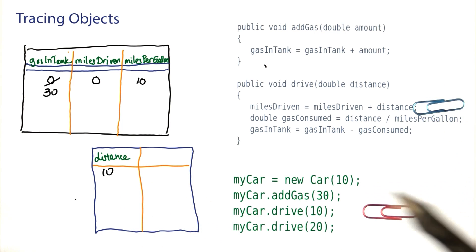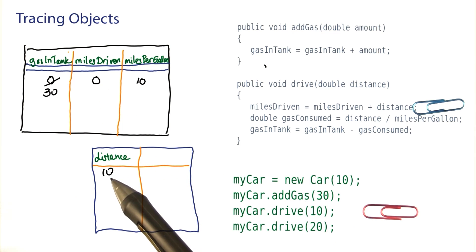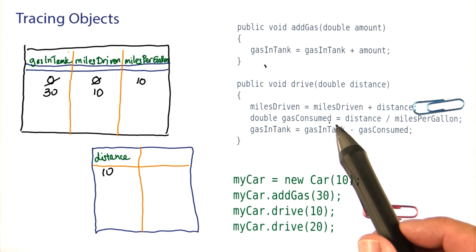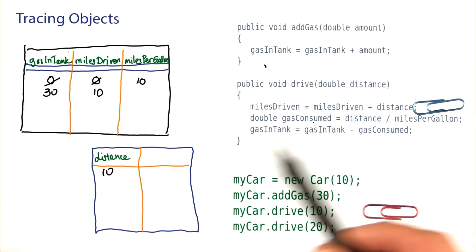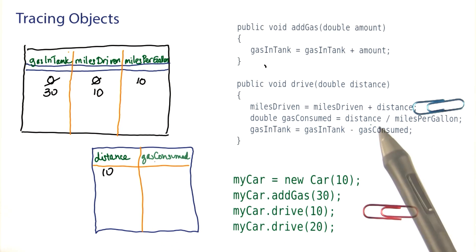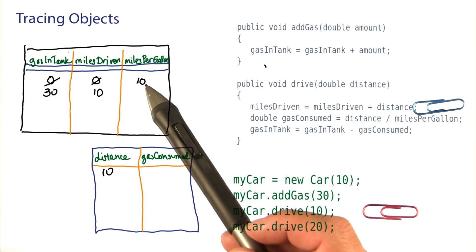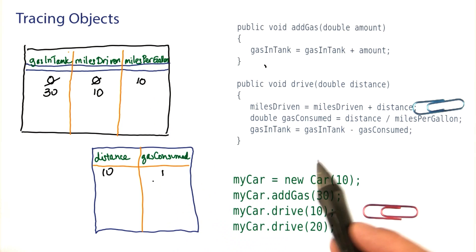We update miles driven. Previously it was 0. We add 10. That's now 10. Now here we compute the gas consumed. That's another local variable. I'll put it on my napkin. It's the distance divided by miles per gallon. 10 divided by 10. So we consumed a gallon.